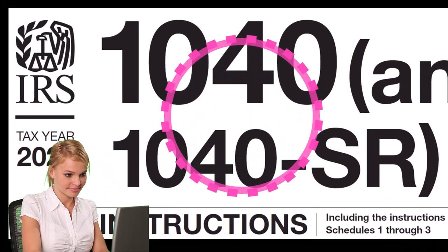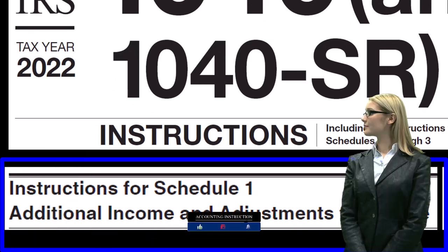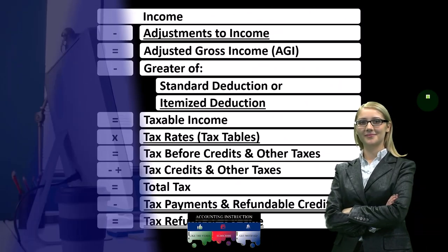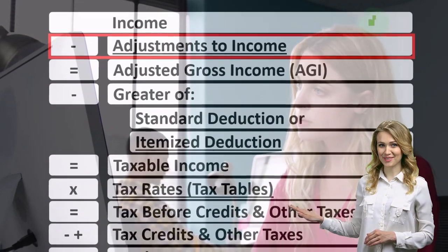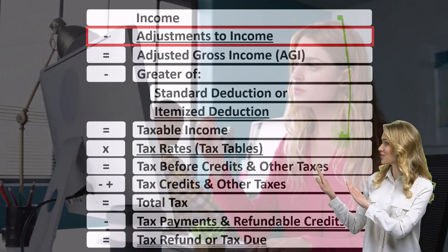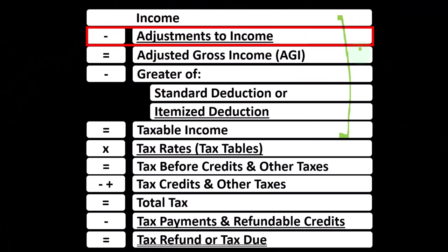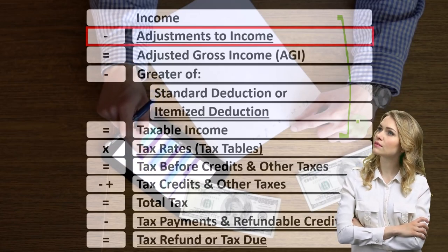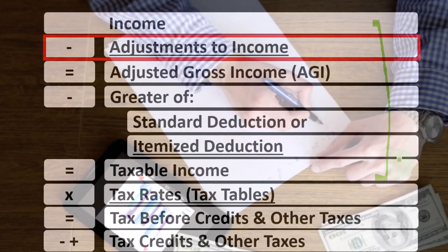Most of this information comes from the Form 1040 instructions, tax year 2022, instructions for Schedule 1 — Additional Income and Adjustments to Income, adjustments to income section, which you can find at irs.gov. Looking at the income tax formula, we're focused on line two, that being the adjustment to income. The income tax formula is in essence a modified income statement, where we have income minus the equivalent of expenses — the deductions — arriving at the equivalent of net income, that being taxable income. Our objective, flipped on its head, is to minimize and have as low as possible the taxable income.